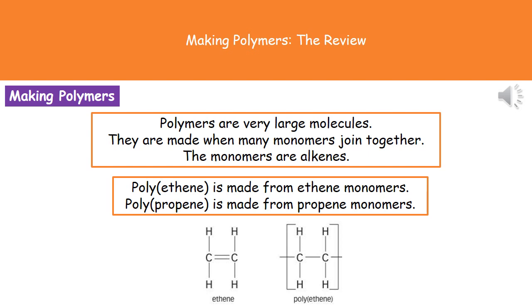At the very bottom there, what we've got are the displayed formulas. Every so often they like to ask you to draw the displayed formula of either the monomer or the polymer when they give you the other one. On the left hand side we've got the monomer, ethene. We know that's the monomer because it's got the double bond between the carbons.